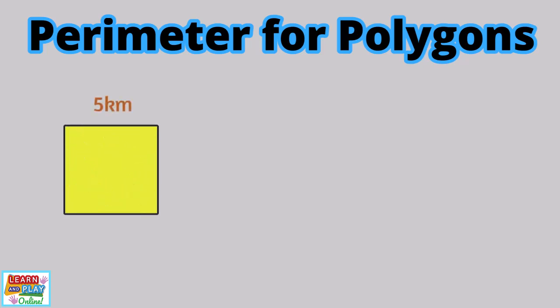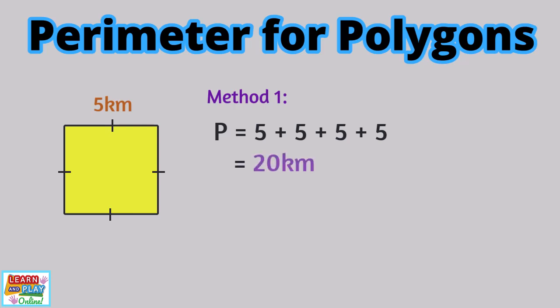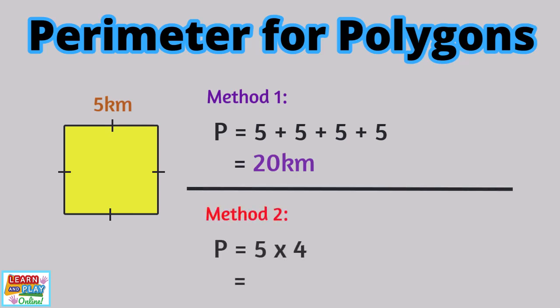The last shape we will explore for today is a square. This one may be easy, but we wanted to show you a different method to work out the perimeter if you come across a shape that has all equal sides. You may see little lines to indicate that the sides are equal. The sides on this square are all 5 kilometers in length. To work out the perimeter, we can do 5 plus 5 plus 5 plus 5, which equals 20 kilometers in total. However, since we know that a square has all equal sides, another way to work out the perimeter quickly would be to use multiplication. If we do 5 times 4, we would get the same answer: 20 kilometers. So that's just a tip — you can take the length of one side and multiply it by the number of sides the shape has as a quicker way to work out the perimeter.